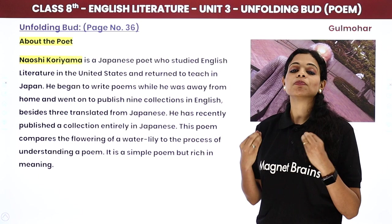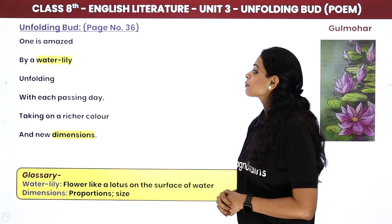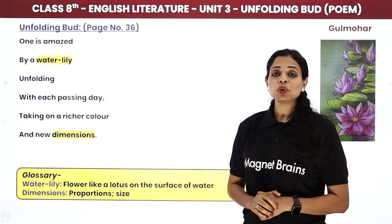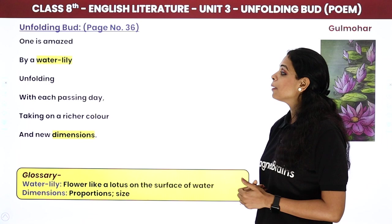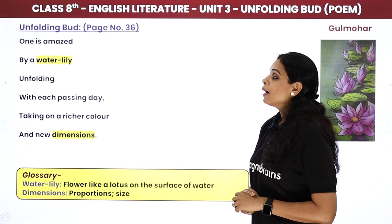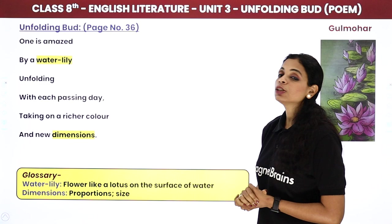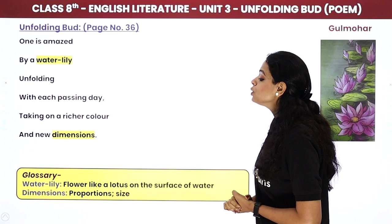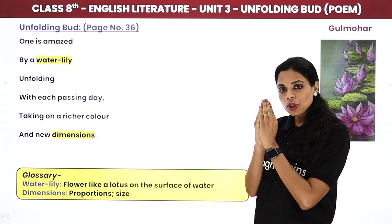Now let's start with the poem. 'One is amazed by a water lily unfolding with each passing day, taking on a richer color and new dimensions.' People are very amazed — 'one is amazed' — by a water lily. A water lily is a flower like a lotus that blooms on the surface of water. With each passing day as the water lily unfolds, its color becomes richer and more vibrant, and its dimensions — its size — also grow.